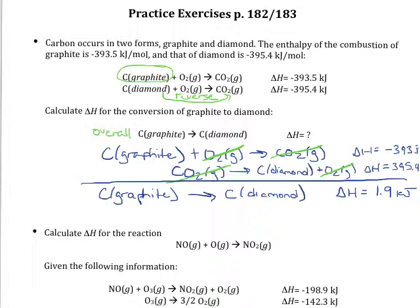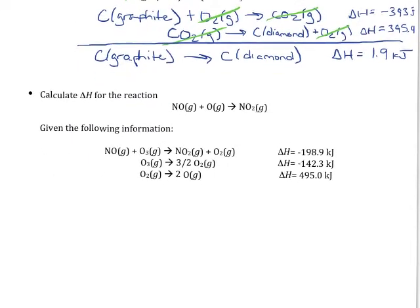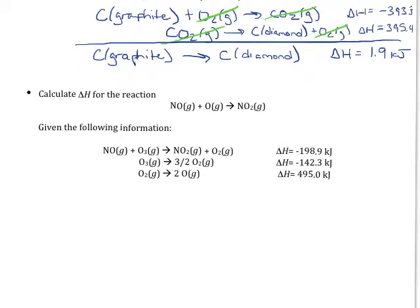Make sure that you have the correct compounds canceling out on each side of the reaction arrow. In this next problem, they're again giving us the complete overall reaction they want, and they're giving us three sub-reactions that we can add together to create it. In the first sub-reaction, I can see NO as a reactant — that's good — and NO₂ as a product — also good. What I don't want is the O₃ and O₂; I just want O by itself. The only place I see O by itself means I'm going to need to reverse that bottom reaction because I want O by itself on my reactant side.